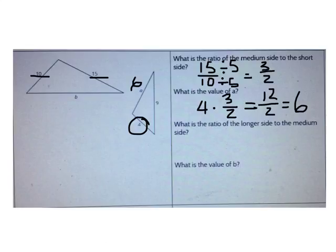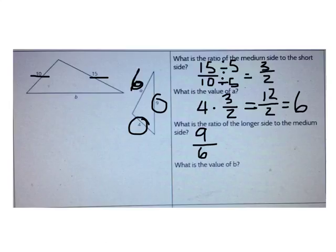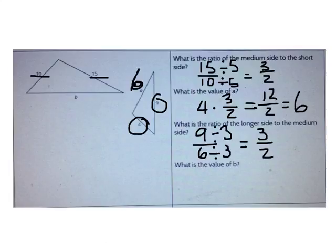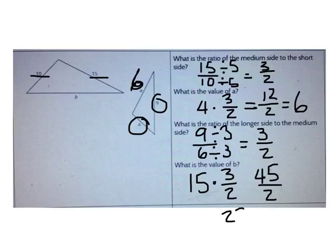Now let's solve our next problem. What's the ratio of the longer side to the medium side? The longer side is 9 and the medium side is 6. The largest number that goes into both 9 and 6 is 3. When I simplify, I get the fraction 3 over 2. To find b, I can multiply 15, the medium side, times 3 over 2. 15 times 3 is 45 over 2. When I divide, I get 22.5. So b is 22.5.